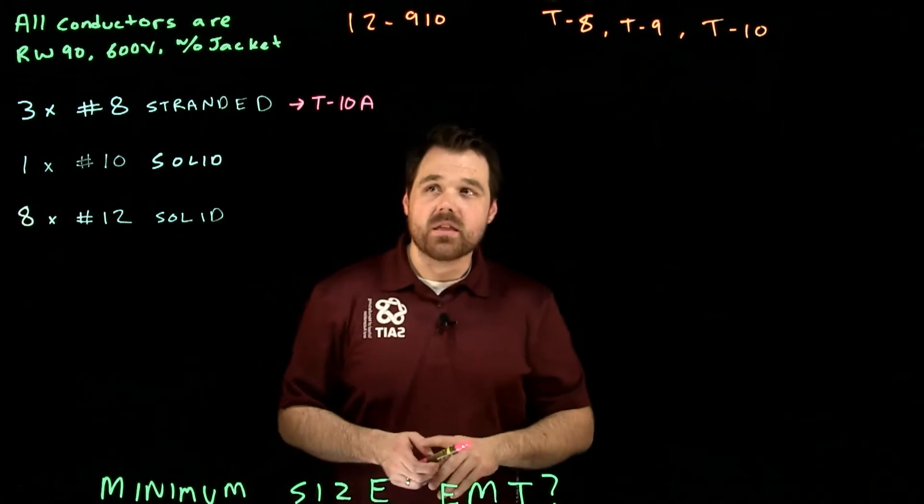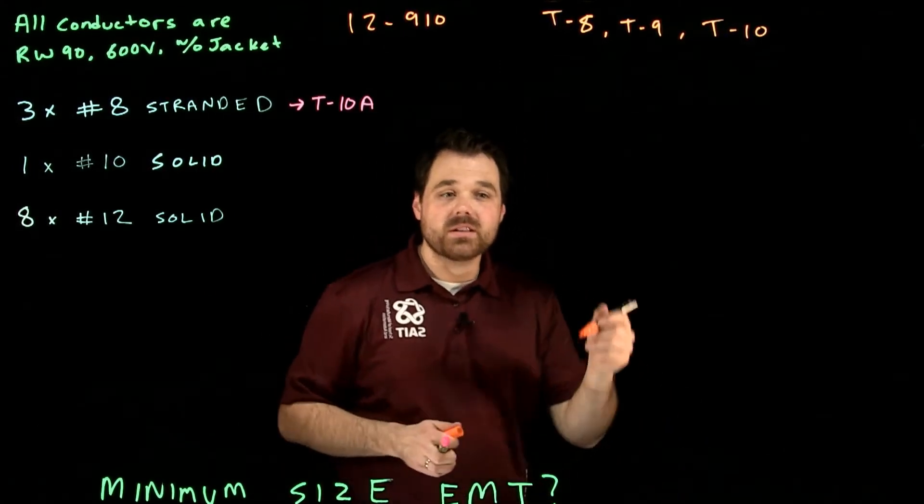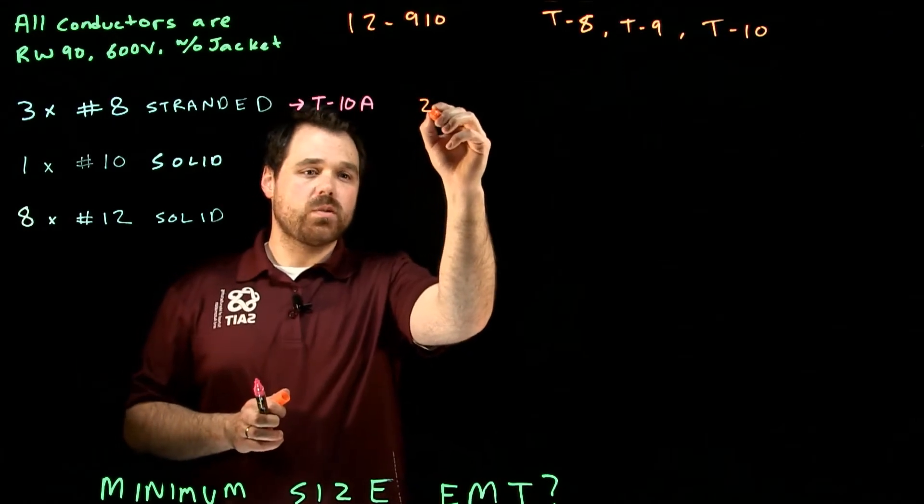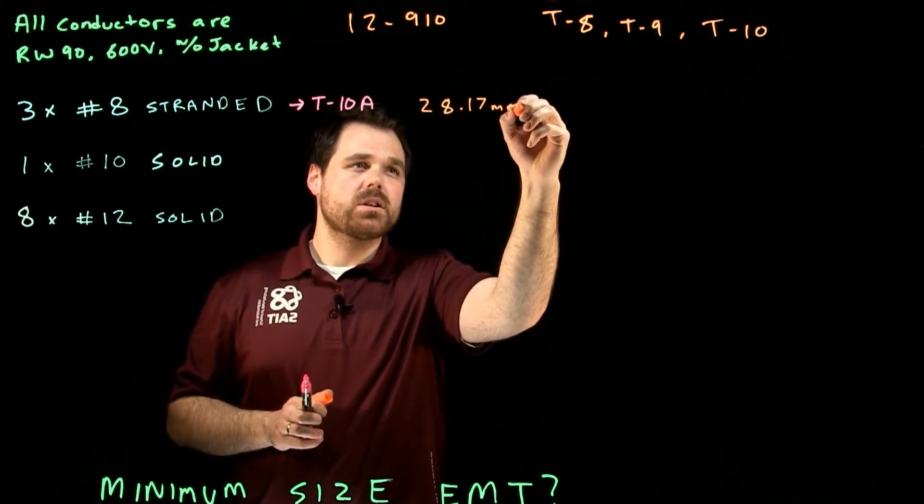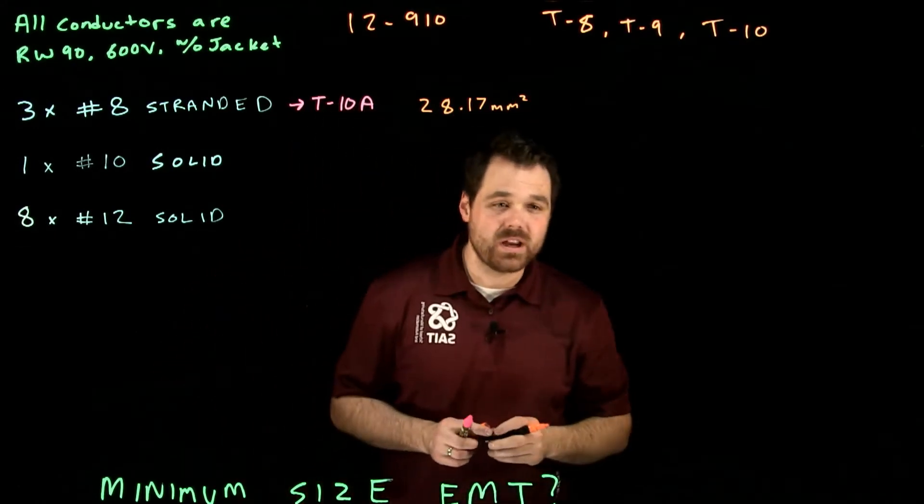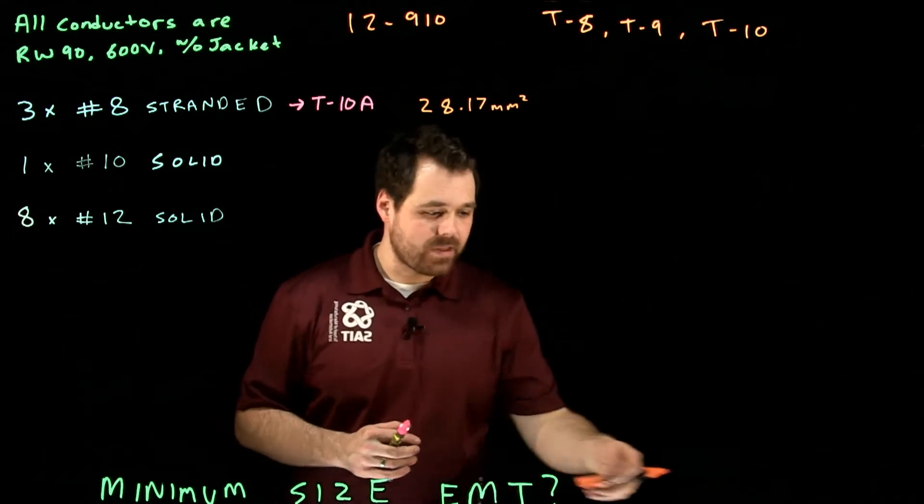And we are going to determine the size of one number 8. And we can determine that one number 8 is good for 28.17 millimeters squared. Now that's just one number 8. Yes, I know we're pulling three in the conduit, but we'll do that math after.